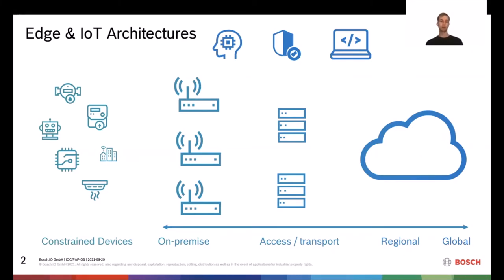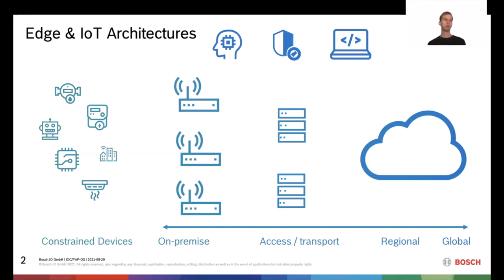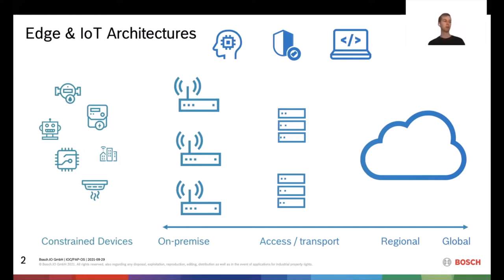Then you have devices controlling these constrained devices, bridging to the internet and enabling more computationally intensive tasks — AI being a future possibility — and more software flexibility. There's also the access transport edge, but I'll mostly talk about the device edge, the on-premise side. For more on these terms, I recommend reading the white paper on State of the Edge. And of course you also have the cloud, where data aggregates and more computational power lives.